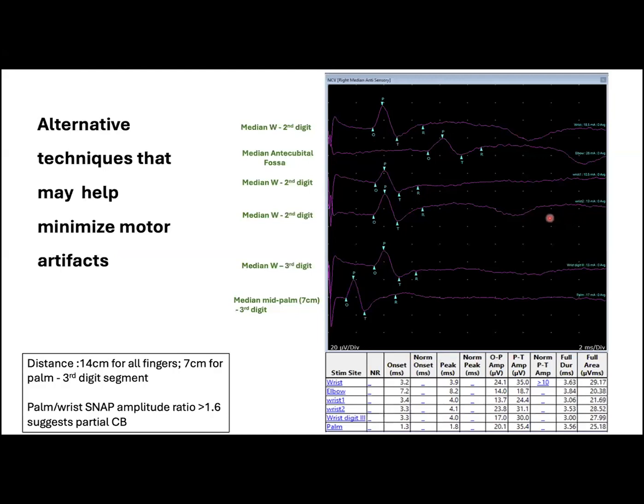Here we have additional recordings from the same patient, who appears to be very slender, given the relatively low electrical stimulation intensities. The first tracing here represents a median snap, with stimulation at the wrist and recording at the index finger, and the second one here when stimulated at the anticubital fossa.